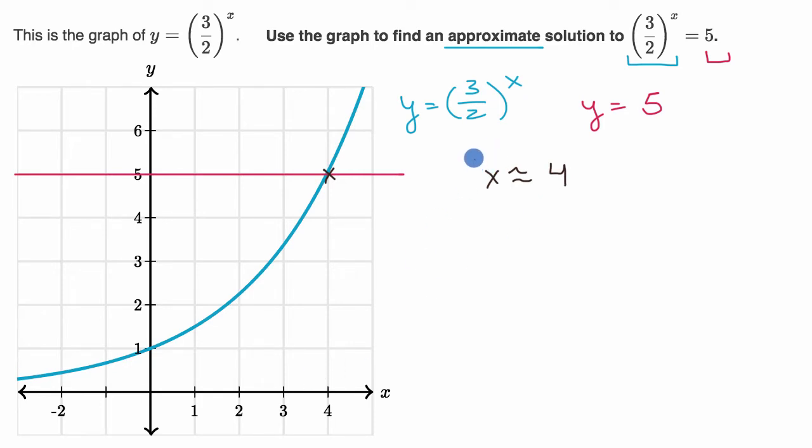And if we wanted to, and we'd be done at that point, if you wanted to, you could try to test it out. You could say, hey, does that actually work out? Three halves to the fourth power, is that equal to five? Let's see, three to the fourth is 81. Two to the fourth is 16. It gets us pretty close to five.